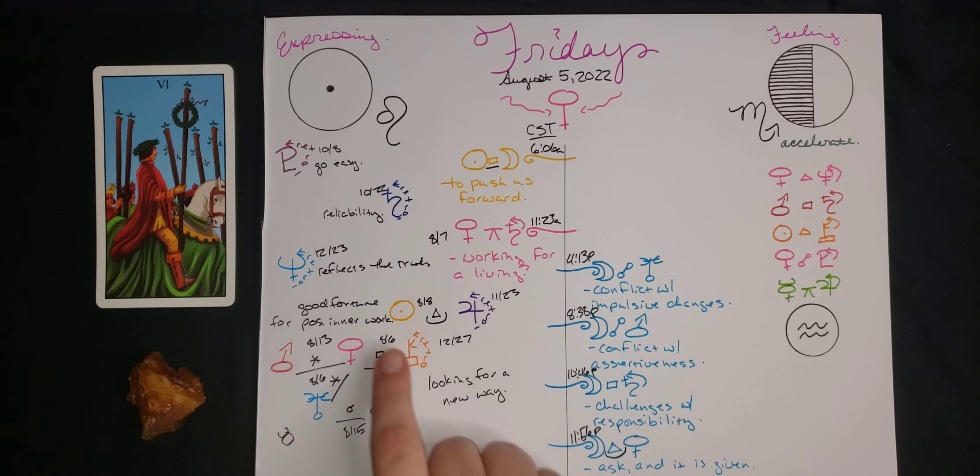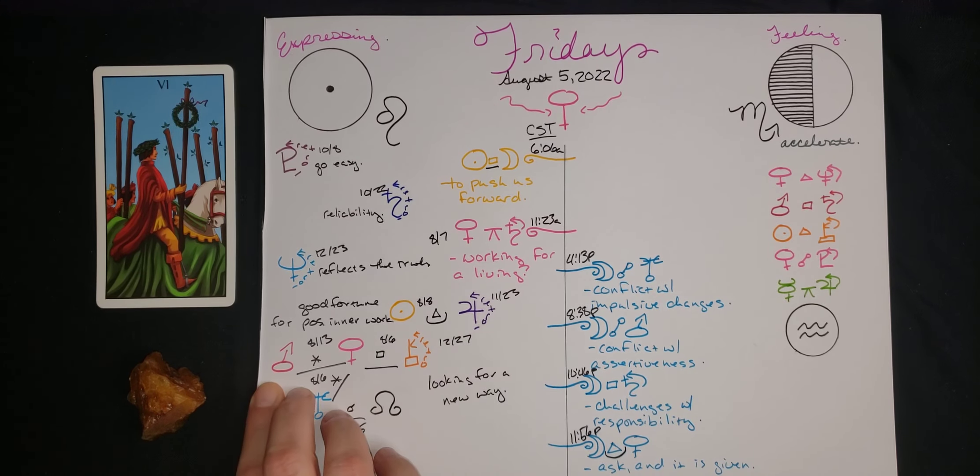Sun is trine to Jupiter here, and this is sort of what's happening on the surface. Good fortune is at work in our lives, especially for positive inner expansion. We want to get bigger on the inside. We're trying to grow our capacity to be, do, and have more and more all the time.